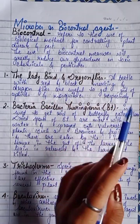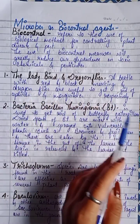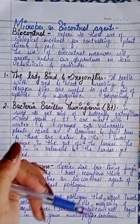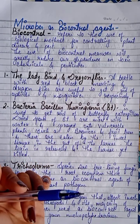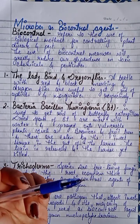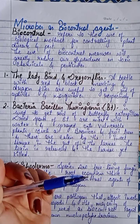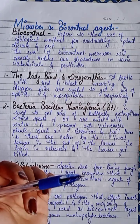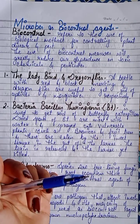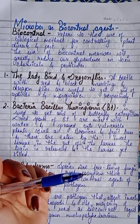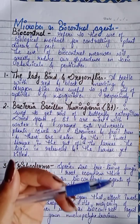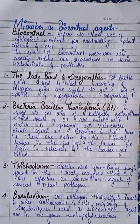Beetles with red and black markings — ladybirds — and dragonflies are useful to get rid of aphids and mosquitoes respectively. The ladybird, which is red and black in color, can be used to remove aphids — insects that attack our plants. If we introduce dragonflies, mosquitoes will come under control.